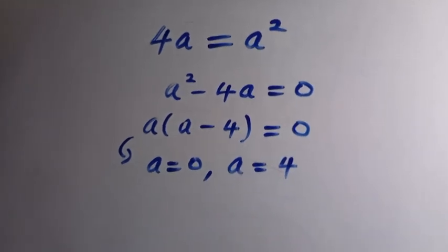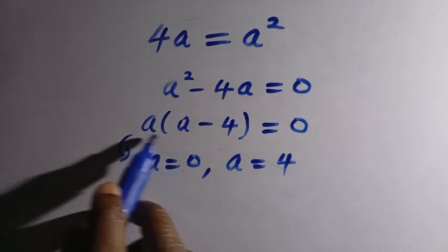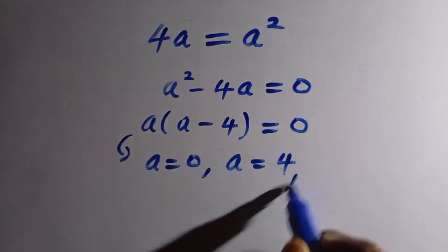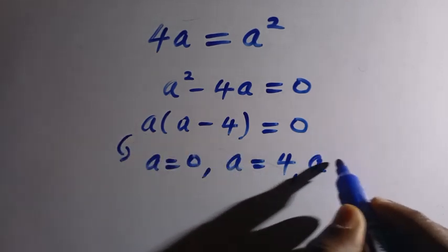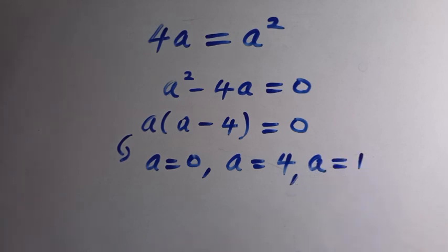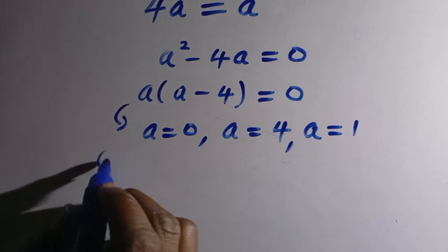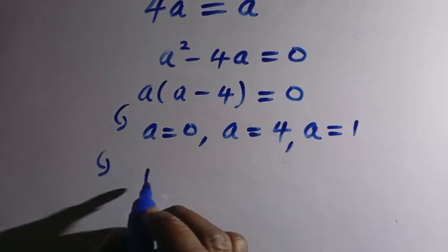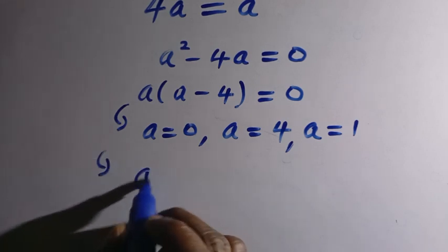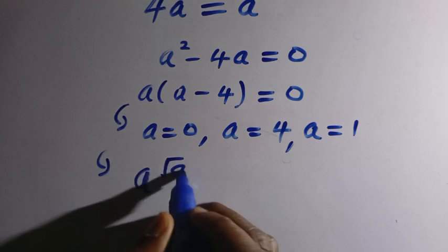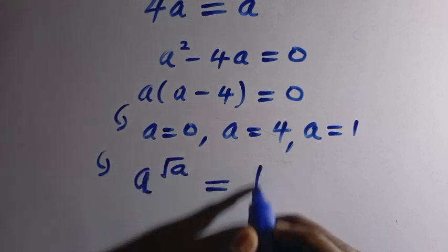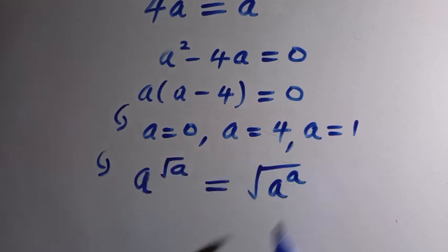So we have three candidate solutions: a equals 0, a equals 1, and a equals 4. We need to verify which of these actually satisfy the original equation: a raised to the power of square root of a equals the square root of a raised to the power of a.